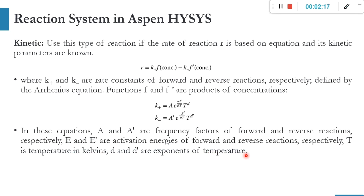There are basically three types of reaction models: kinetic, simple rate, and heterogeneous catalytic. Today's system is the forward isomerization of cis-2-butene to trans-2-butene. For a forward-only irreversible reaction we use the kinetic model. When information about both reverse and forward reactions is given, we can use either kinetic or simple rate, but for simple rate we must have the rate constant value.